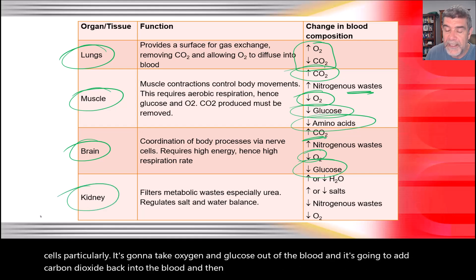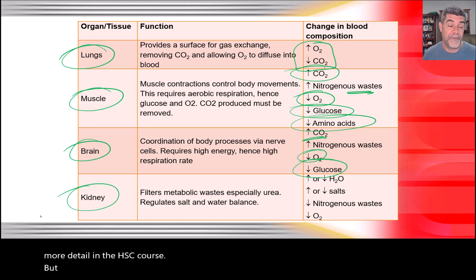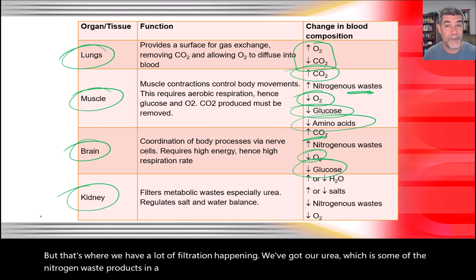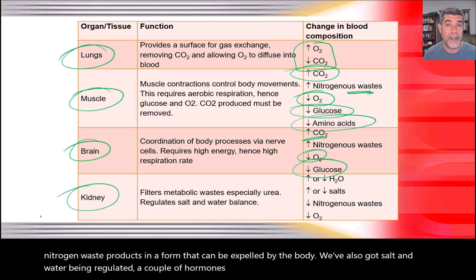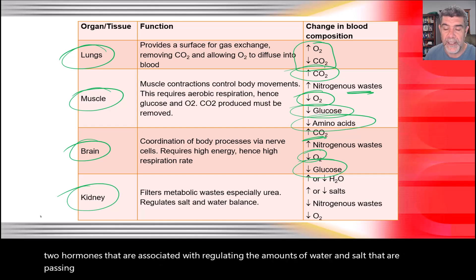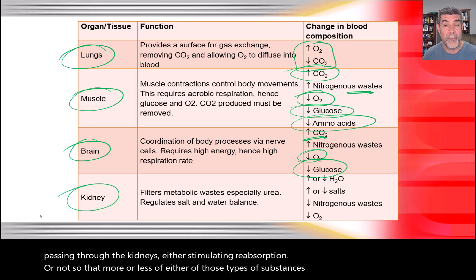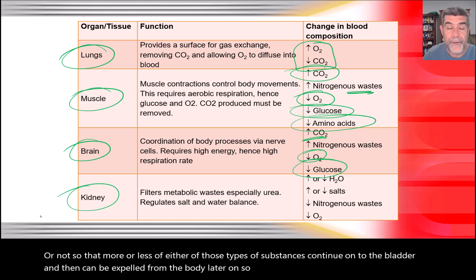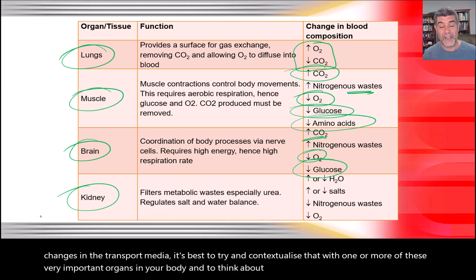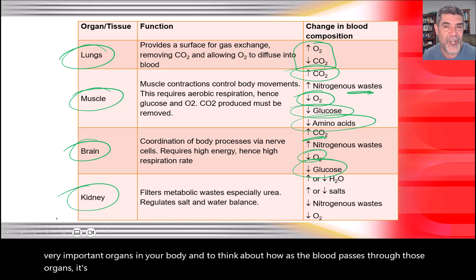Finally, the kidneys — we'll look at these in more detail in the HSC course — is where a lot of filtration happens. Urea, a nitrogen waste product, is expelled by the body here. Salt and water are regulated by two hormones: antidiuretic hormone and aldosterone, which regulate the amounts of water and salt passing through the kidneys, either stimulating reabsorption or not, so that more or less of those substances continue to the bladder and are expelled. When going through changes in transport media, contextualise them with these key organs and think about how blood composition changes as it passes through them. Thanks for watching.